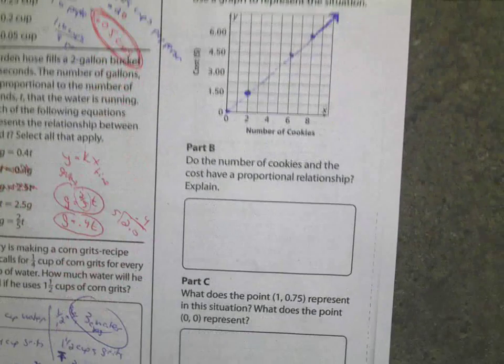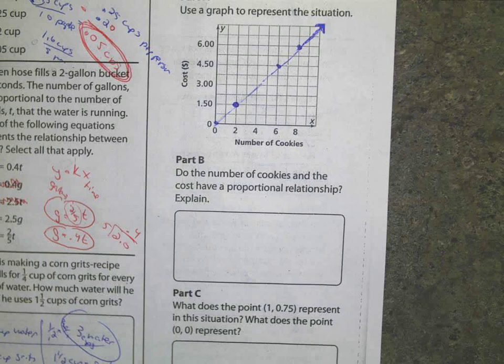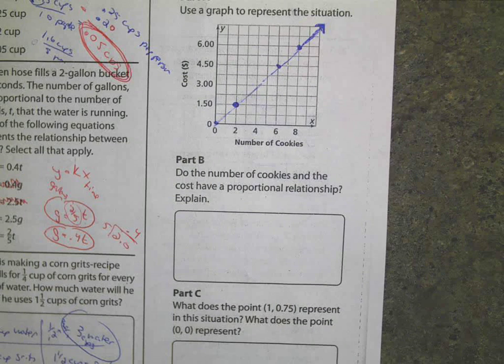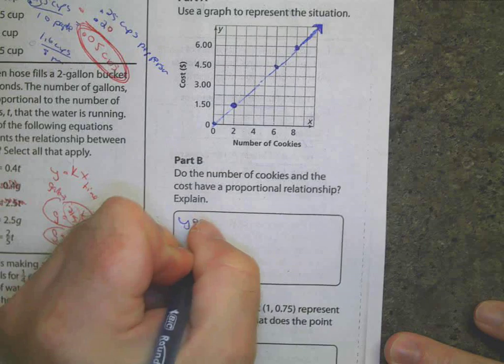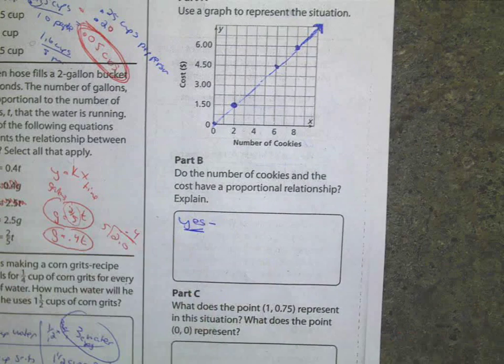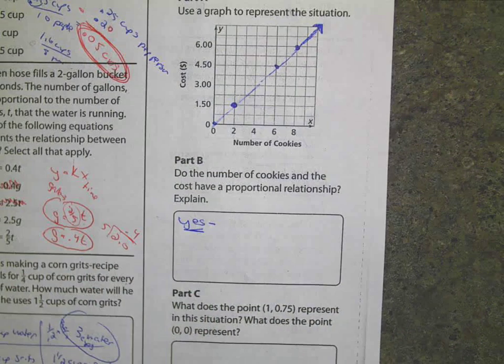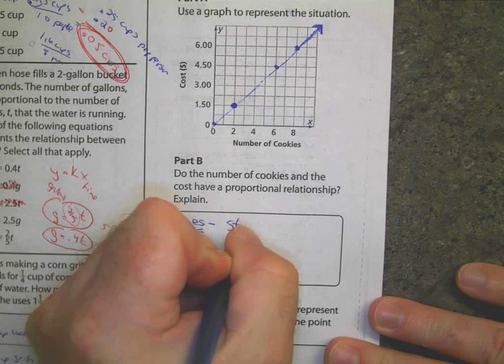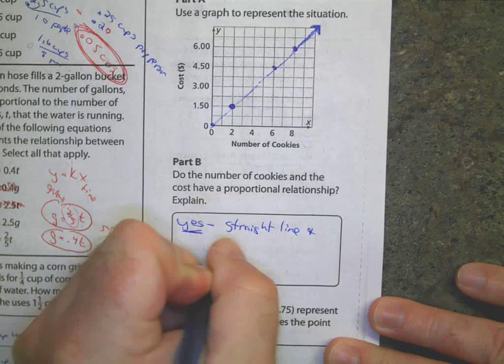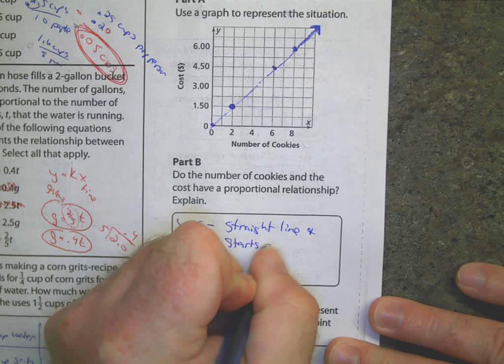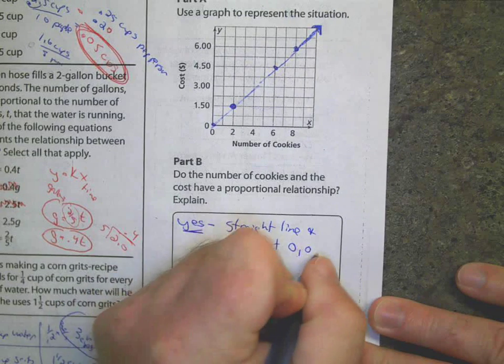Do the number of cookies and the cost have a proportional relationship? Who wants to tell me the two criteria that tell me if this is proportional? I'll say, first of all, it's yes. Yes, this is proportional. Deegan, why is this proportional? Because the line is straight and it starts at zero. Straight line and starts at zero comma zero.